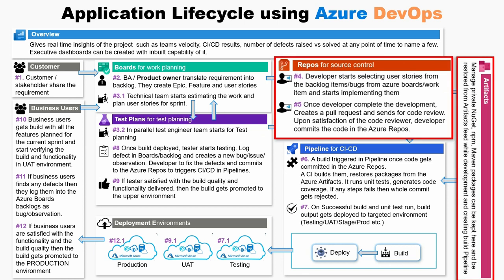The product owner explains all the requirements to the team and initiates the sprint. Developers start picking user stories from the backlog and implement those tasks. Once a developer completes the development of a task, they create a pull request and send code for review. Once it gets approved, the developer commits the code in Azure Repos.